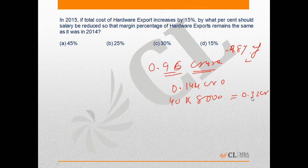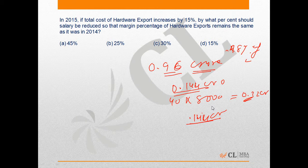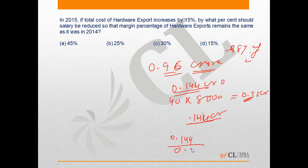We need to reduce the salary by 0.144 crore so that the margin remains the same, because 0.144 crore is the increase in cost of the company. To have the same margin as the previous year, we reduce salary by this figure. The required percentage is (0.144 / 0.32) × 100 = 45%. Hence, option A is the correct answer.